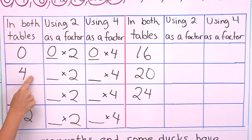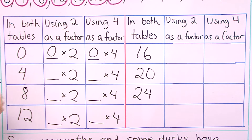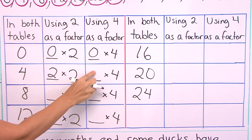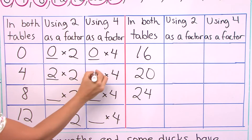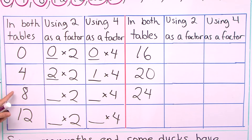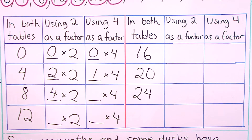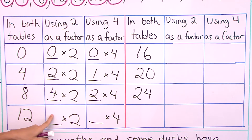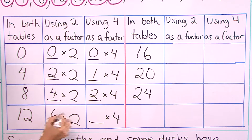And then 4 — in the table of 2 it would be 2 times 2, right? In the table of 4, it is 1 times 4. And 8 would be 4 times 2 in the table of 2, and over here it would be 2 times 4. And 12 — in the table of 2 it's 6 times 2, and here it is 3 times 4.